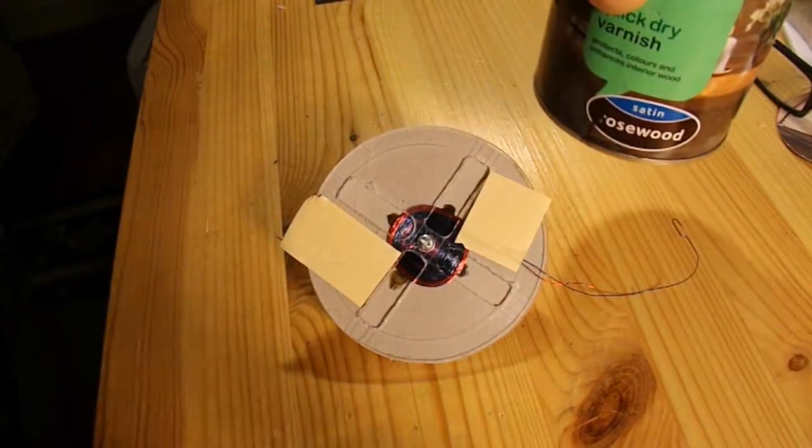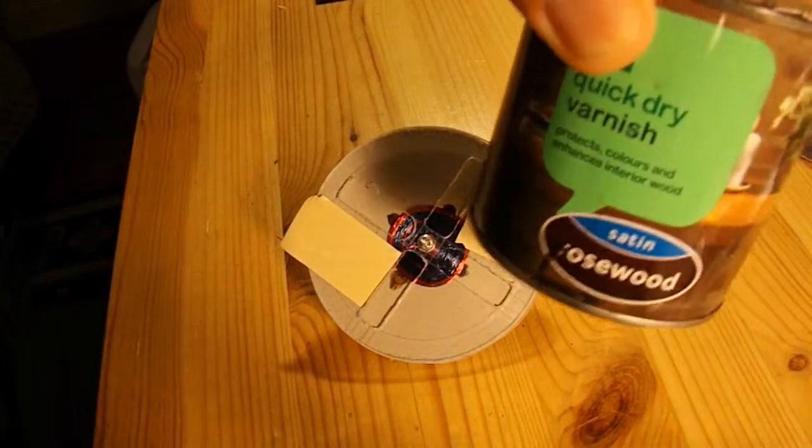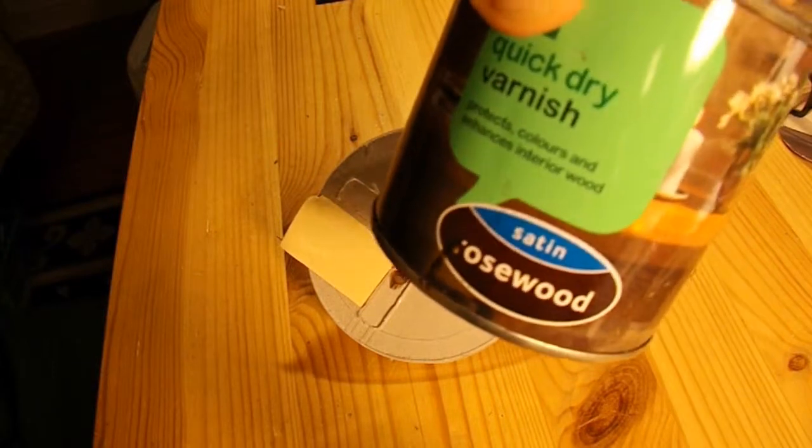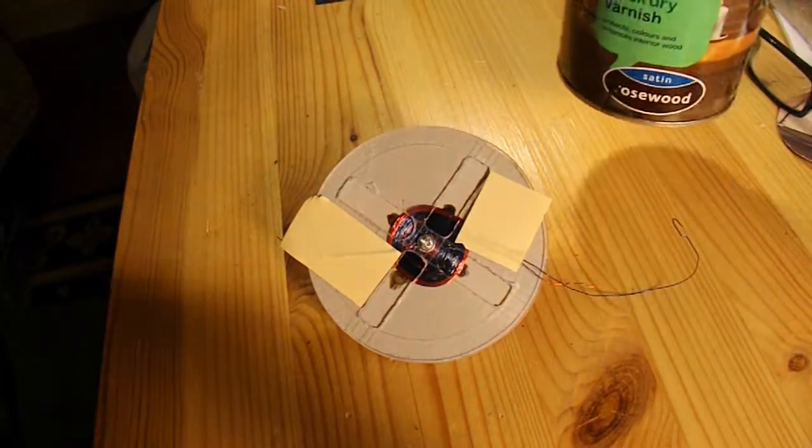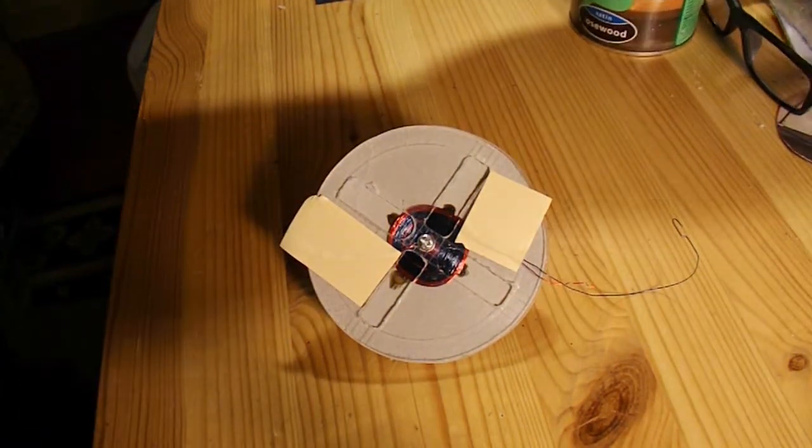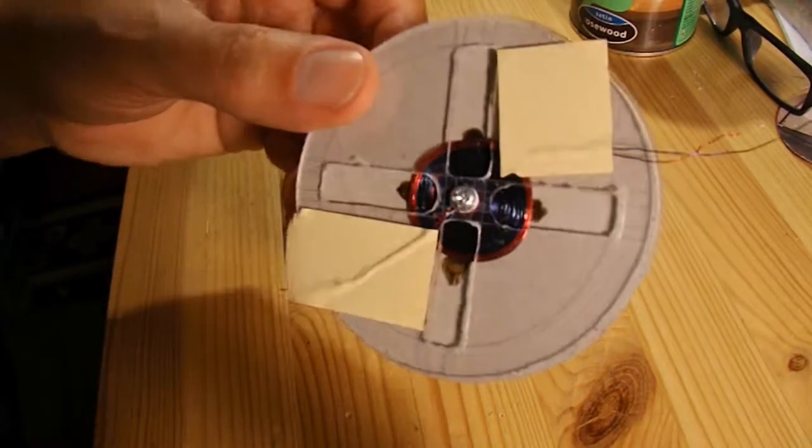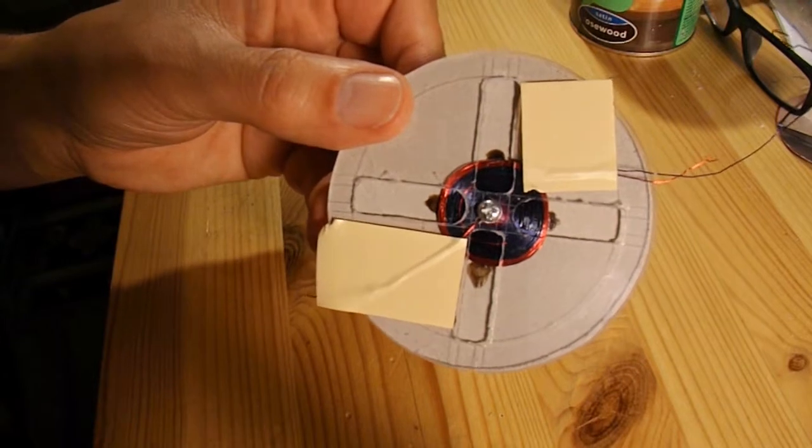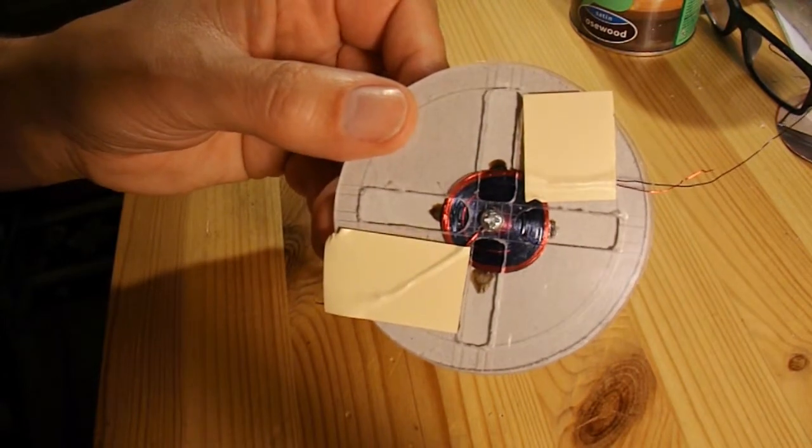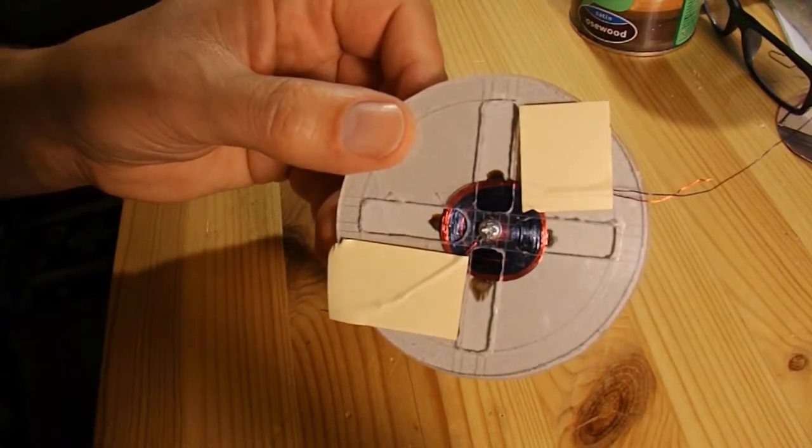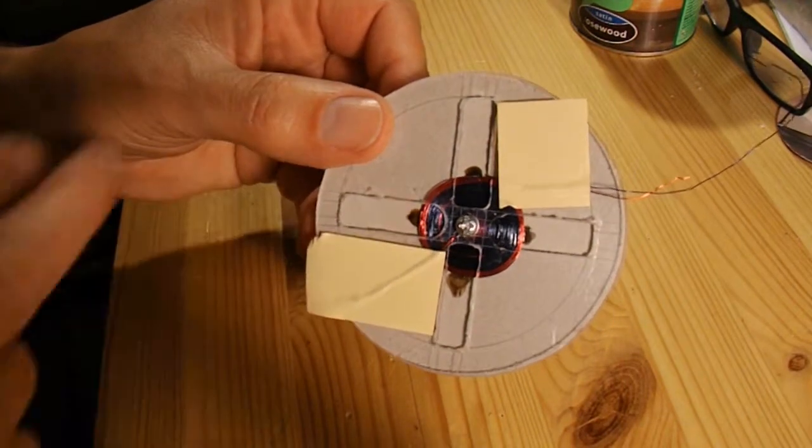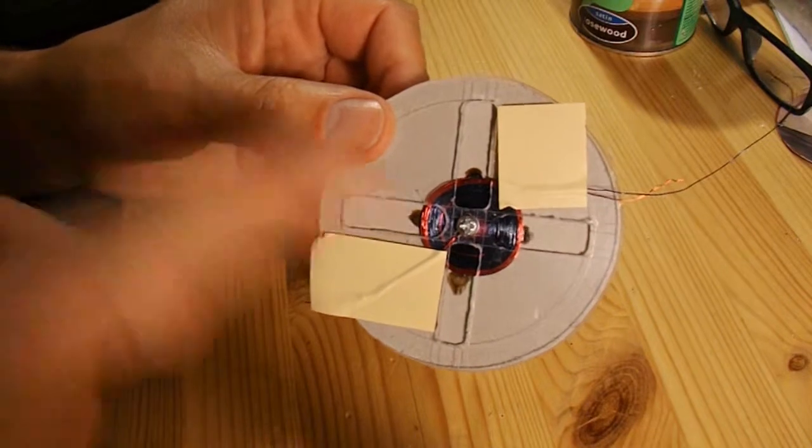Right, no idea if that'll work. Getting a bit desperate here. I managed to find some quick dry varnish, wood varnish, down in the garage. So I'll put a little bit in each of my slots. I'll leave that to dry. I might even give it another coat. And then I'll take the former off and give it a few more coats all over.